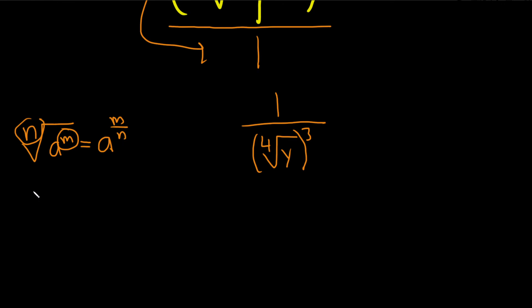At the same time, if you have the nth root of a and the m is on the outside, it's actually the same thing. It's a to the m over n.